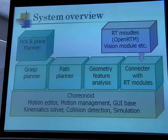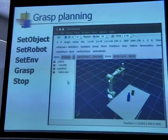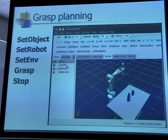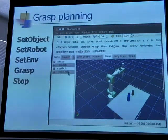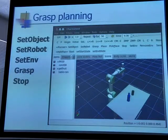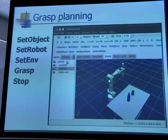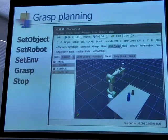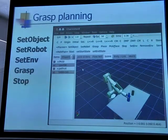This is an example of plugin operation. If the planner is selected, the grasp planner is calculated in a short time. First, an object is set and the robot is set, then the environment obstacles are set using an interface, and then start.